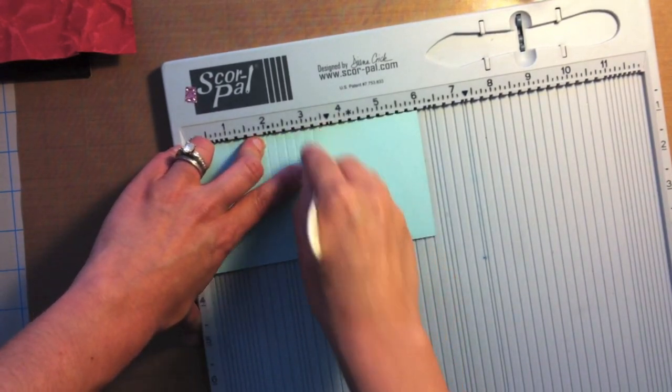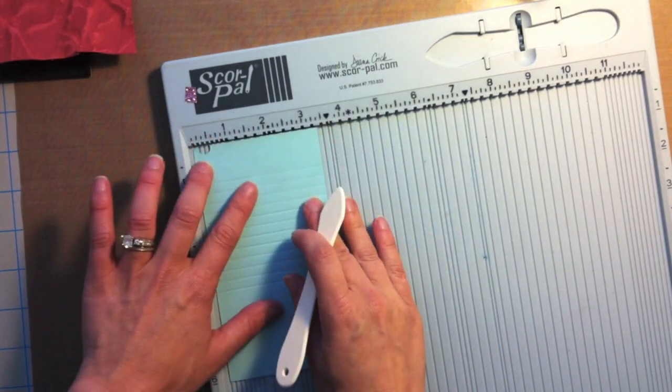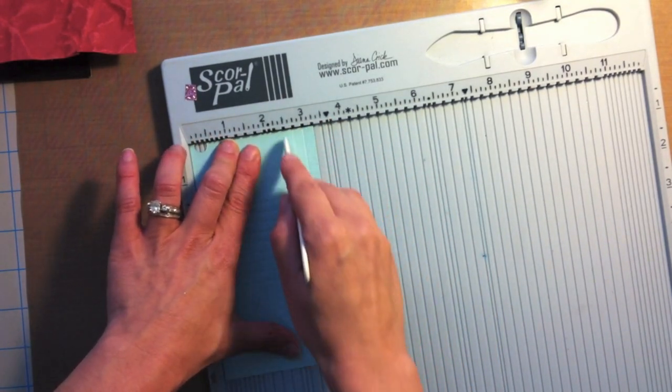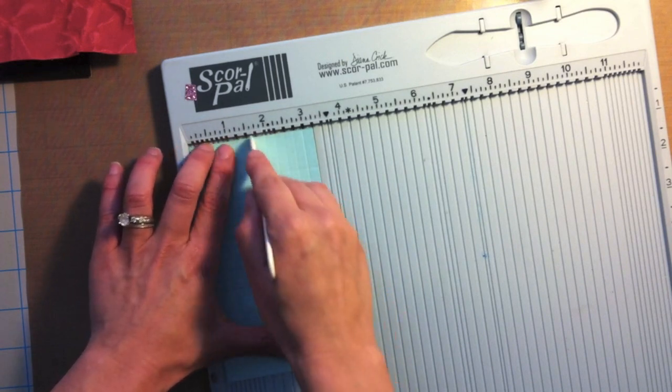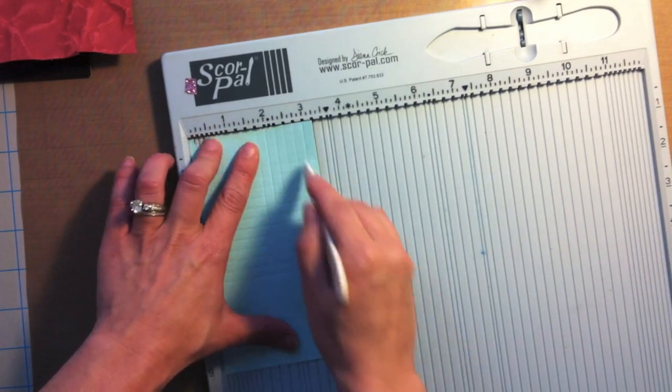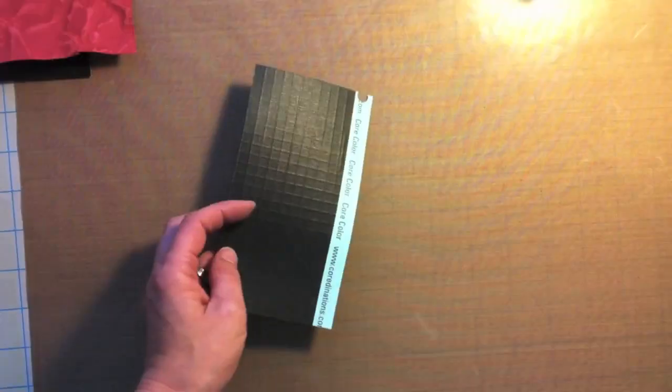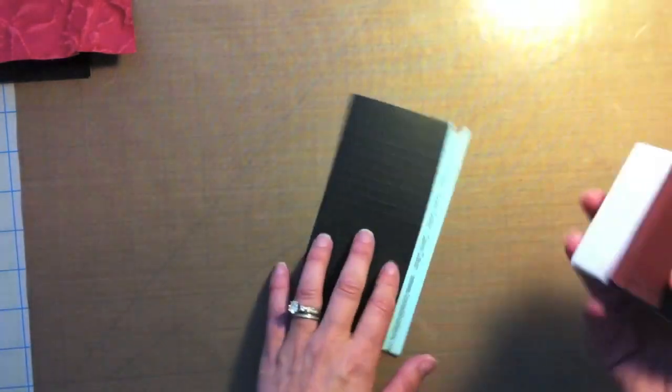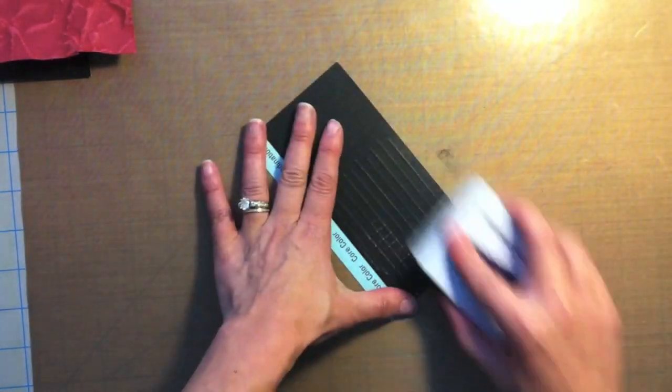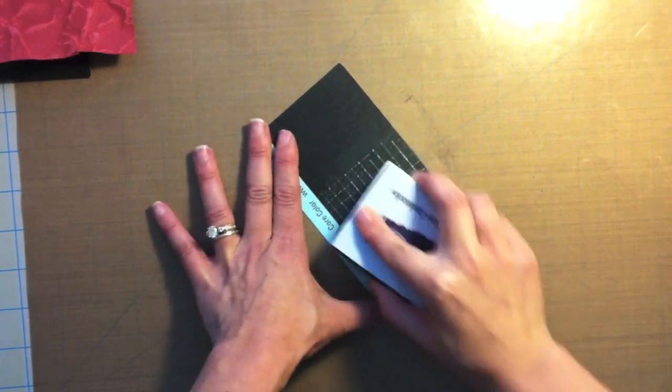I'm using a black on one side, teal on the other side cardstock from Coordinations and I'm just quickly creating a score pattern for you. So you'll be able to see, then I'm going to take that sanding block by Coordinations and I'm just going to sand right over it and look at those score lines, how they shine through with that underlying color.